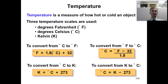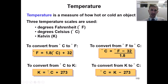Another conversion factor is for converting degrees Celsius to Kelvin. Degrees Celsius is the most commonly used temperature scale, which is why we need to know how to convert it to Fahrenheit and Kelvin. In this equation, K equals degrees Celsius plus 273, or 273.15 in some textbooks.